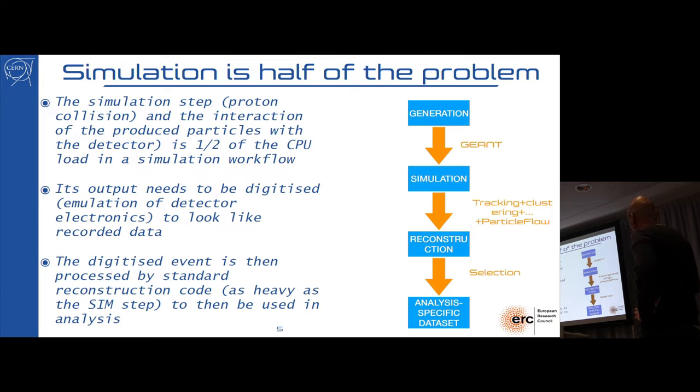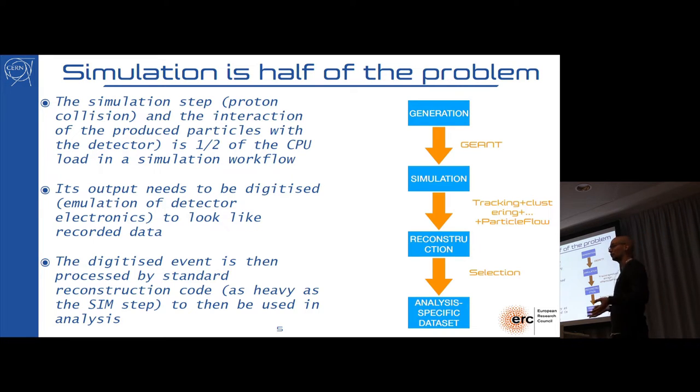So how does this work? We have a full setup of software that starts from what we call generation, when you start from a data card that says what you want to generate. Then we have the simulation step, which is done by injecting the output into a library which we call GAN. This library has all the physics that we know about the interaction of known particles with the material of our detector. This is the part which is extremely consuming.